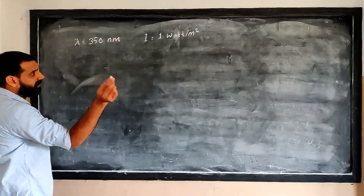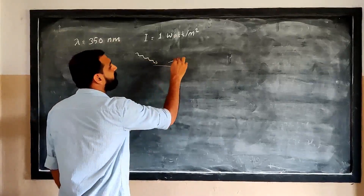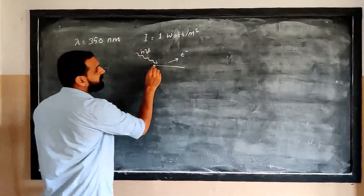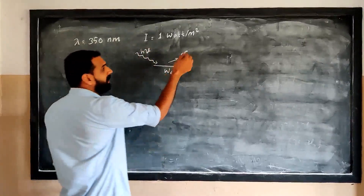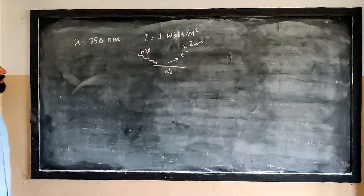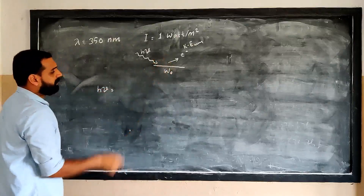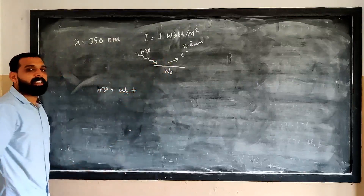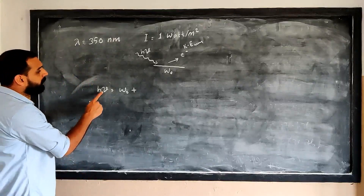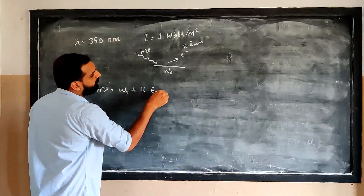Let's talk about photoelectricity. Light is incident on a material and electrons are emitted. If you want to write the energy of light, it is called hν (h-nu). The electron energy is called KE_max. The energy in light is used for lifting the electron — it equals the work function (W) plus the kinetic energy of the electron. This is energy conservation.